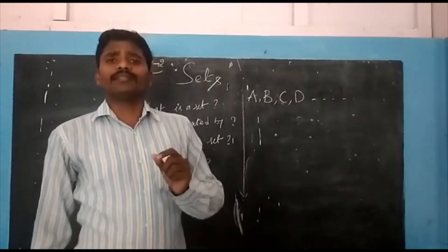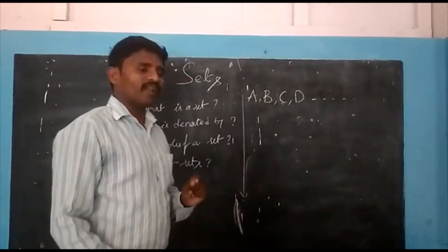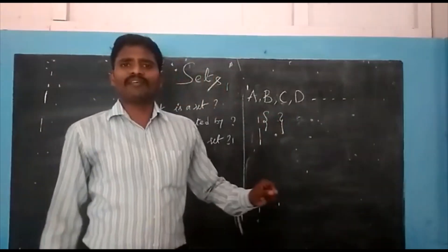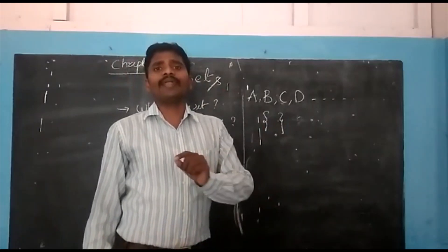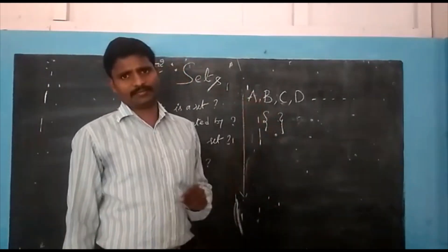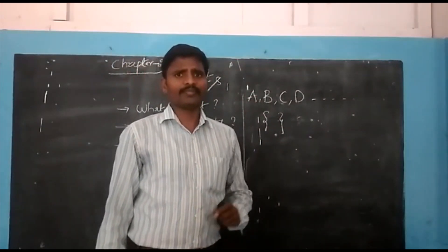And these sets are represented by flower brackets. These flower brackets are also called curly brackets.